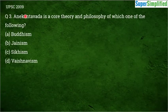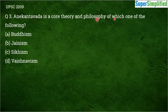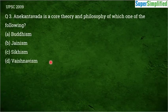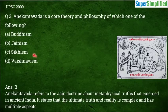Question number 3, from UPSC 2009: Anekantwaad is a core theory and philosophy of which one of the following — Buddhism, Jainism, or Sikhism? The correct answer is B, that is Jainism.